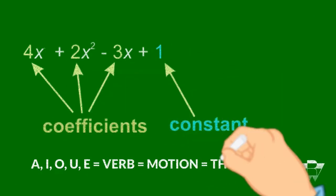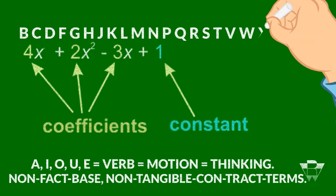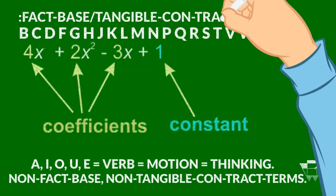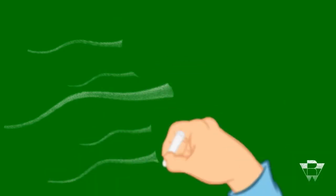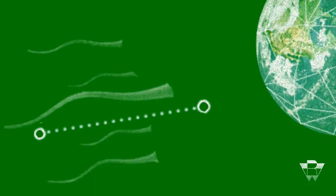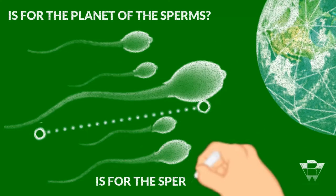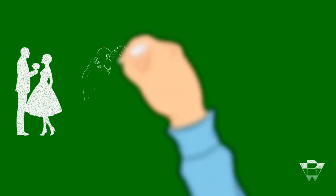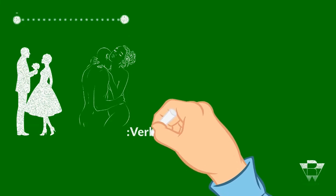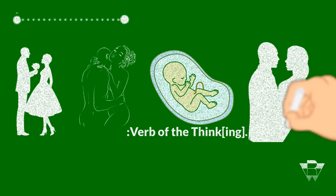So you syntax vowels as verbs — verbs are motion, thinking. Consonants would be syntaxed as fact-based terms. Keeping that in mind, if you put the thinking in front of the fact, you have nothing to think about. You put the motion before there's something to move, so it negates it because there's no direction. In correct sentence structure, you have to have two facts before you have the verb of the thinking — two points to draw a straight line so you know the direction you're going.